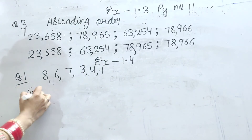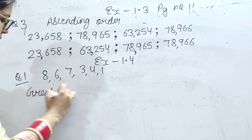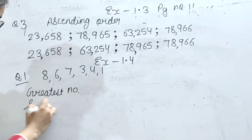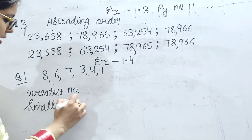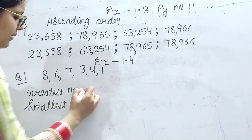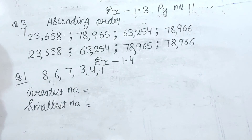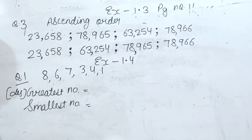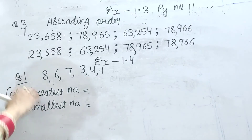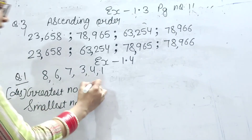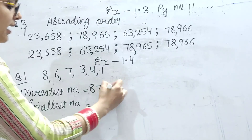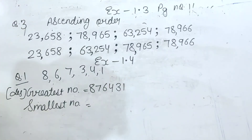To sab se pehle greatest number banate hain, then smallest. Greatest number ke liye kaun sa order follow karte hain? Descending order. Descending matlab bade se chhota. To yaha pe sabse badi digit 8, then 7, then 6, then 4, then 3, and then 1.